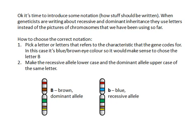This is how we actually write that — this is the notation, in other words, how it should be written. When geneticists are writing about recessive and dominant inheritance, they use letters instead of pictures of chromosomes. A geneticist doesn't draw out a chromosome for each cross they do; instead they use a letter to represent the allele that's been inherited. To choose the correct notation: pick a letter that refers to the characteristic the gene codes for. In this case it's blue-brown eyes, so it would make sense to choose the letter B.